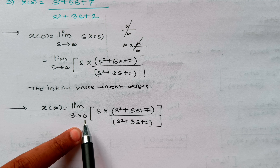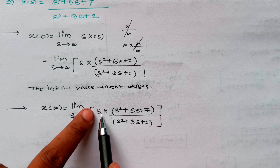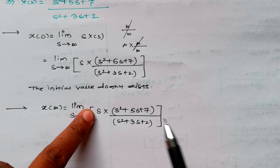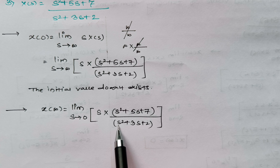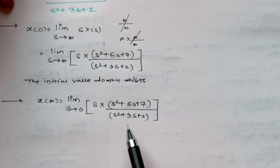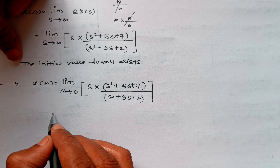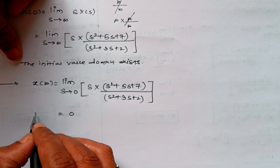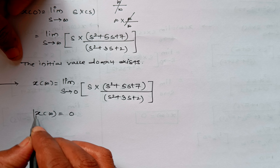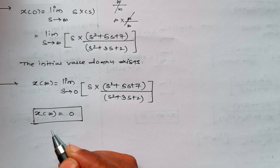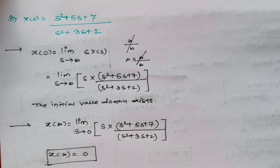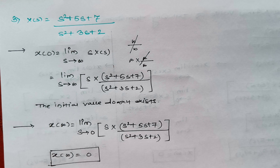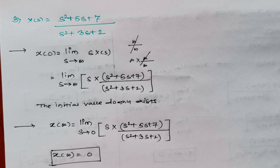When we put s = 0, zero into anything is zero. Also, s² terms cancel. So the final value is 0. This is about a few questions on finding the initial and final values using the Initial and Final Value Theorems. Thank you.